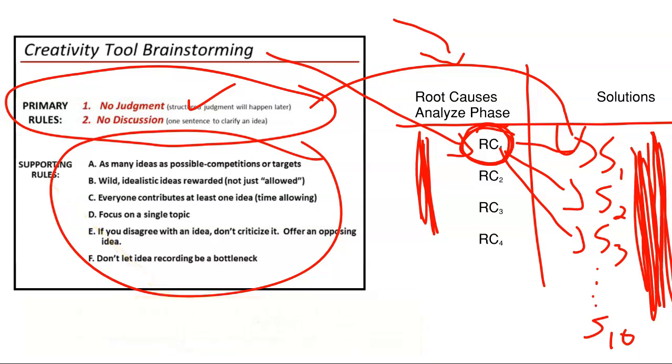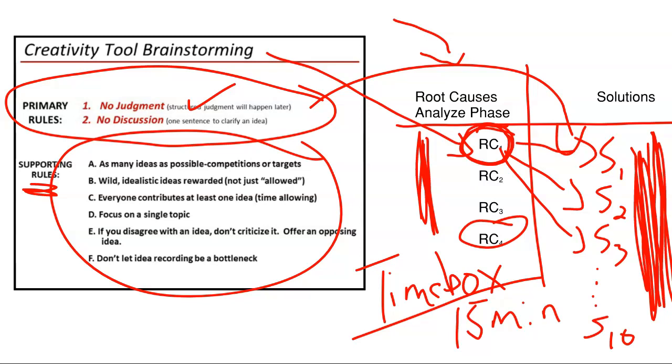One of the things that I like to do, though, that isn't always included in the list of rules is I like to timebox these events. For each one of these bursted brainstorming sessions for a particular root cause, I like the timebox to be no greater than 15 minutes. And frequently, if I've got a high-performing team that's really knowledgeable about where the root causes came from, I might cut that in half and say, let's try to knock out as many possible solutions for this root cause in seven or eight minutes.